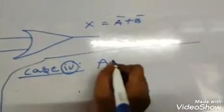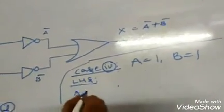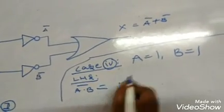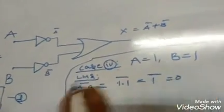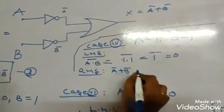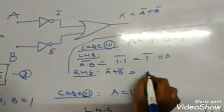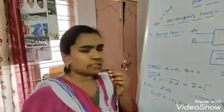Last case, Case 4: A equals 1, B equals 1. LHS: A dot B all bar = 1 into 1 = 1, and 1 bar equals 0. RHS: A bar plus B bar = 1 bar plus 1 bar = 0 plus 0 = 0. LHS equals RHS. Hence we proved that A dot B all bar is equal to A bar plus B bar.